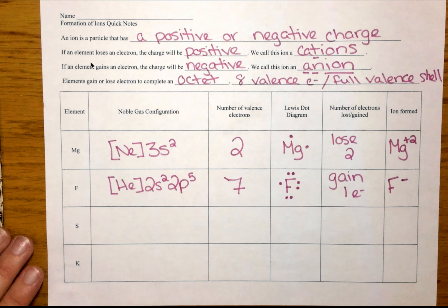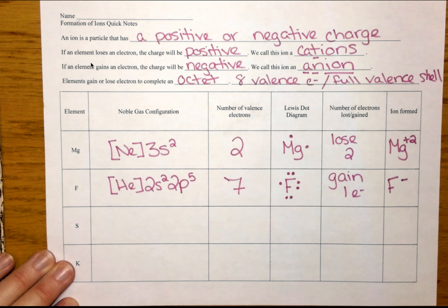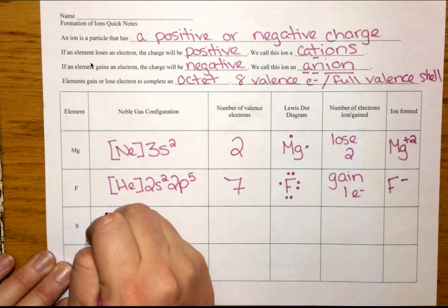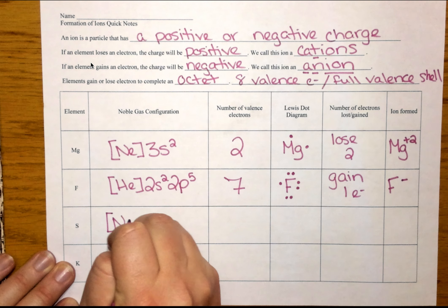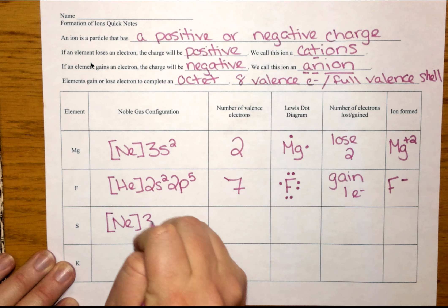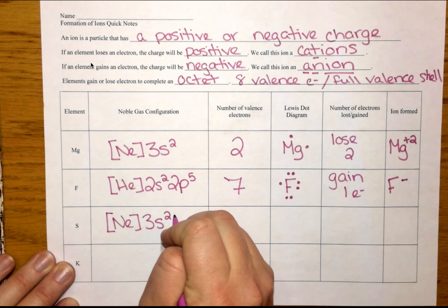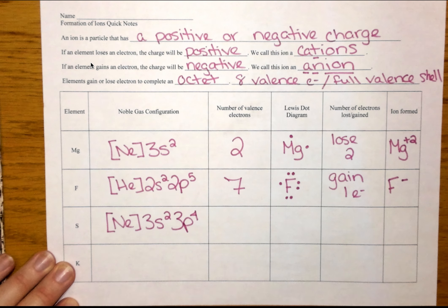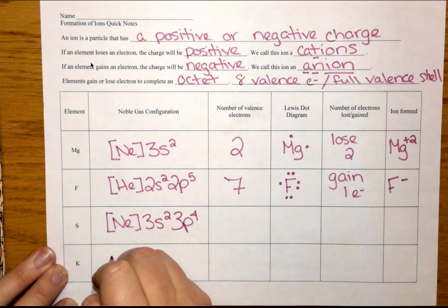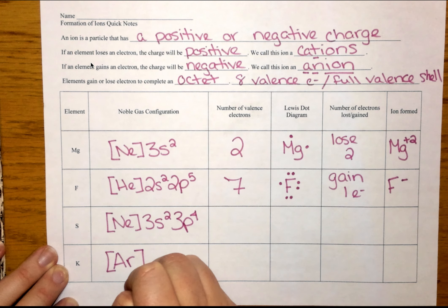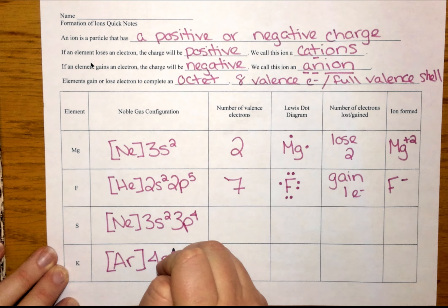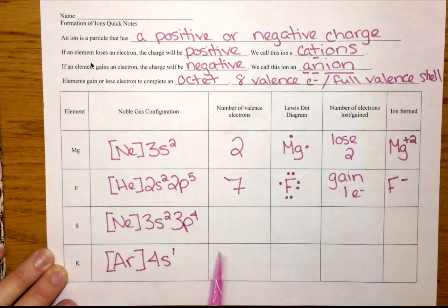Now I'm going to write out the noble gas configurations for sulfur and potassium. And then I want you to finish this table on your own. So sulfur is neon 3S2 3P4. And potassium is going to be argon 4S1. So fill in your valence electrons, fill in your Lewis dot diagram, the number of electrons lost or gained, and your ion formed.